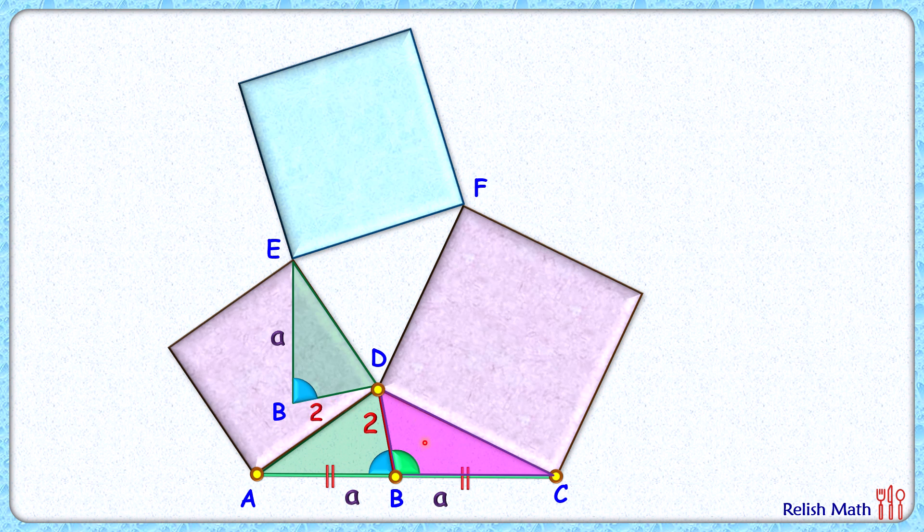Same exercise we will do with this pink triangle where DC length and DF length are equal sides of square. So we'll rotate it 90 degrees but this time anti-clockwise along point D as axis, so this point C will coincide with point F here.